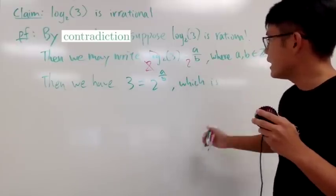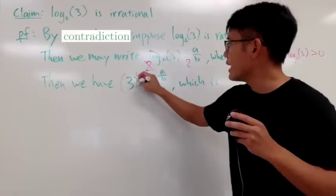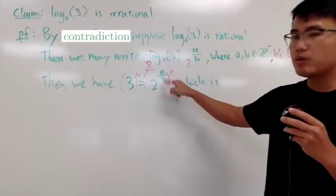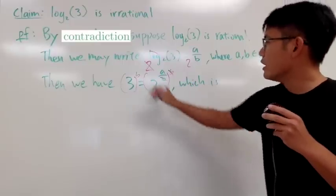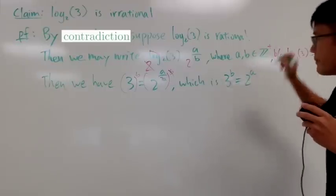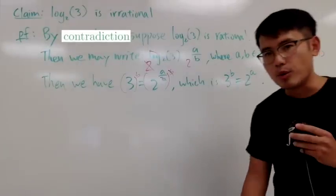Which is the same as, I can just raise both sides to the b's power, so that this power times that. Of course, b and b cancel. So we get 3 to the b equals 2 to the a. That's what we have at the moment.